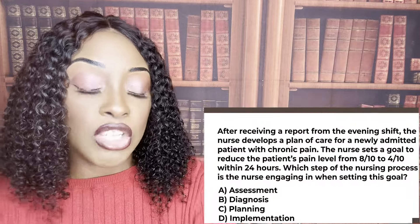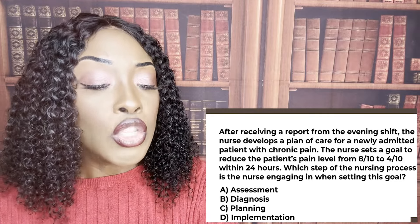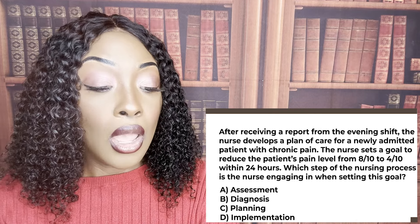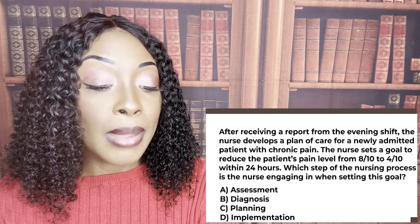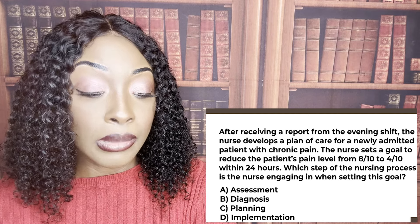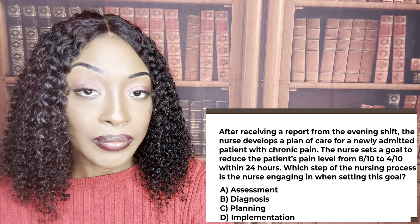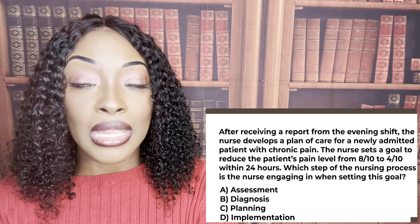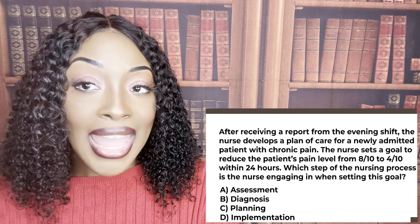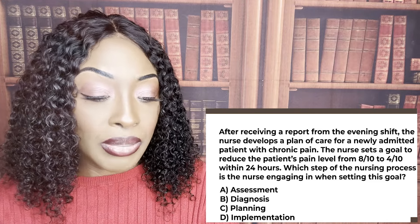After receiving a report from the evening shift, a nurse develops a plan of care for a newly admitted patient with chronic pain. The nurse sets a goal to reduce the patient's pain level from eight out of ten to four out of ten within 24 hours. Which step of the nursing process is this? Planning. Remember, planning is when you set a goal or objective — it needs to be realistic, objective and measurable, with a time frame attached.